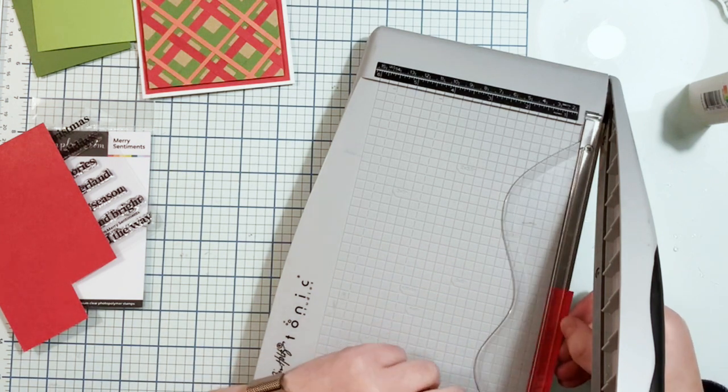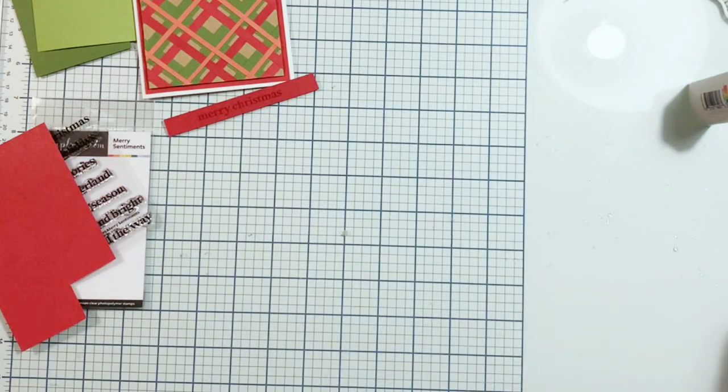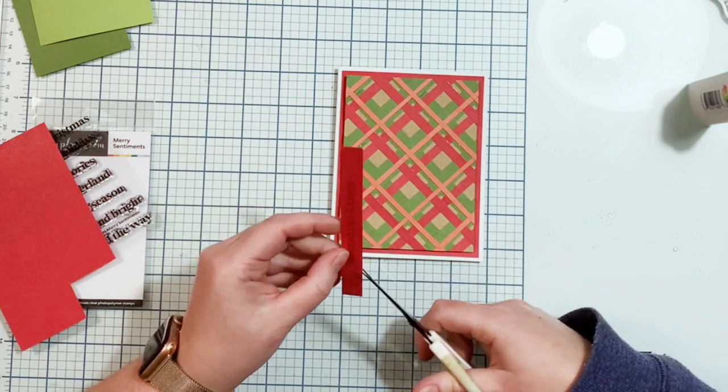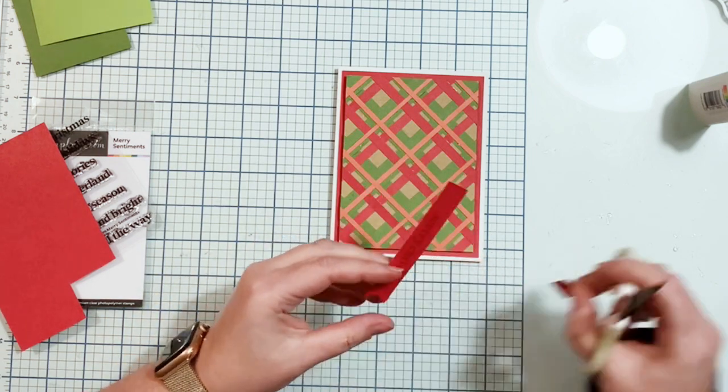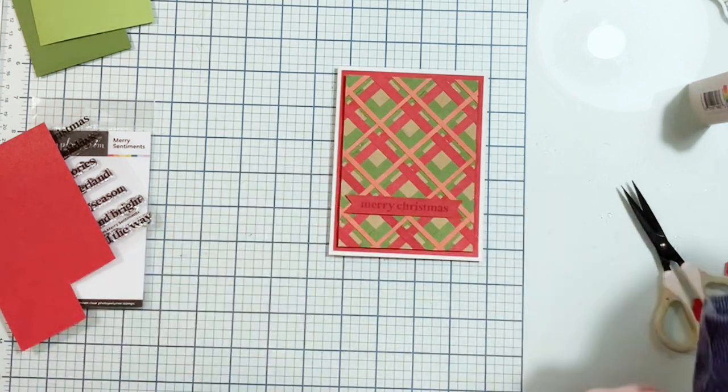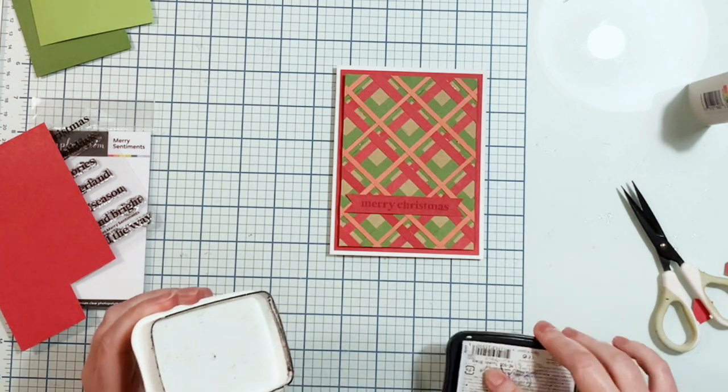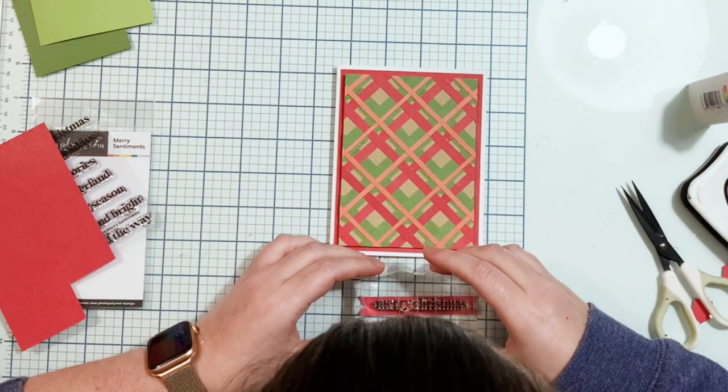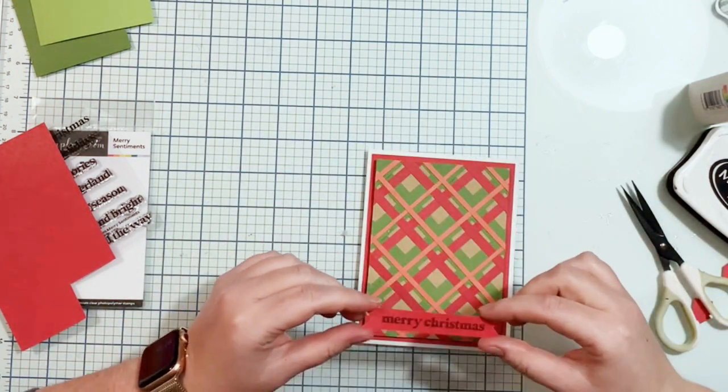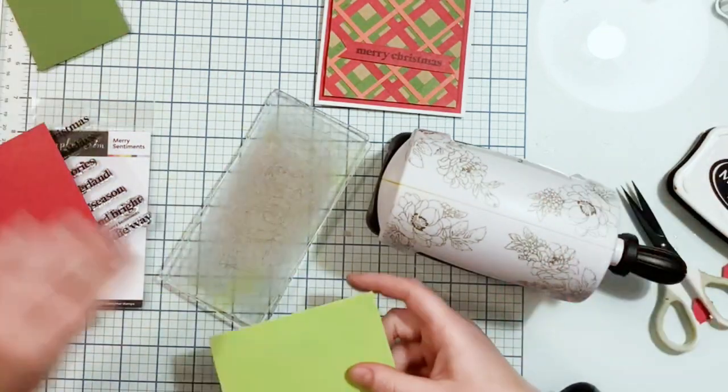I'm trimming it down to the perfect strip. Of course you can use your Misti if you want to, but I was too lazy to do it. I stamped it with a dark red ink, it's one of the Pinkfresh Studio inks. After I finished it I decided it's just not that visible as I wanted it to be, so I took black ink and stamped again creating kind of a shadow, which really made the final effect look nice. It's like a black one with the red outline.